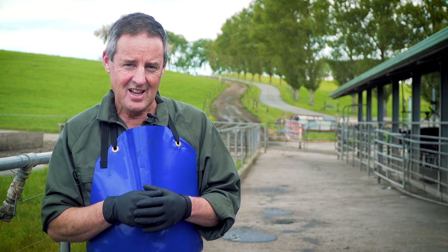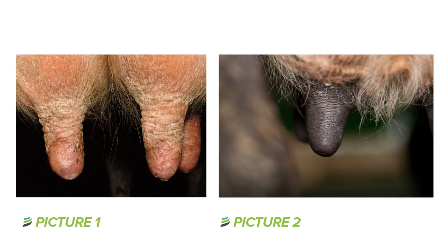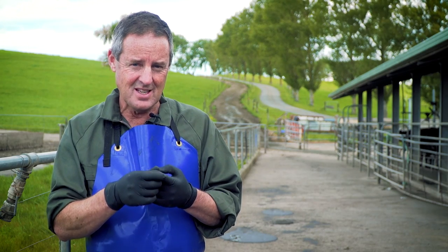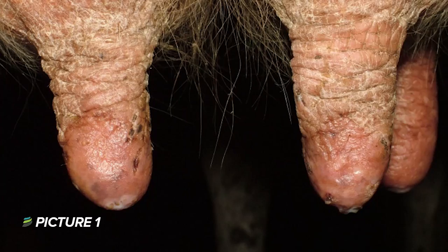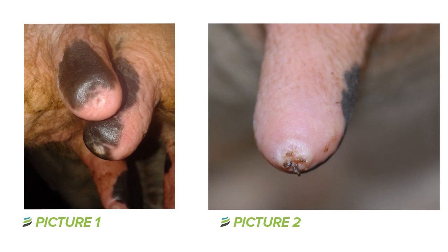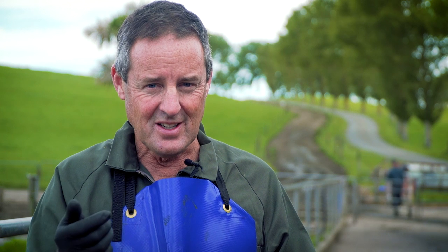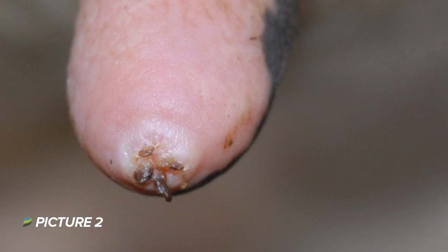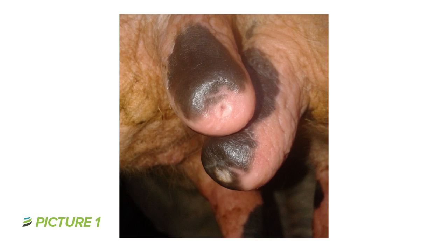Now let's test your knowledge. Have a look at the teats in these following pictures and decide which ones are dry and which are nice and soft and supple. If you chose number one as the dry teat, you're spot on - it's a lot drier than number two which is supple and healthy. Now look at the ends of these teats - which one is rough and which is smooth? If you chose number two as the rough one, you're spot on: you can see how it's scabby and rough, whereas number one is looking pretty good.